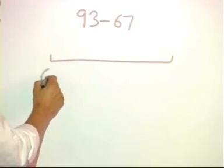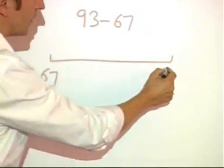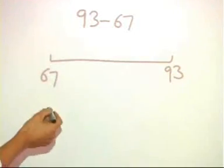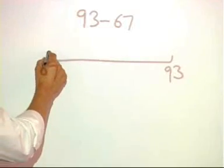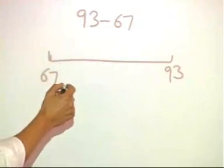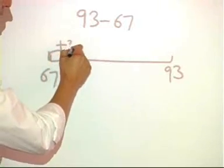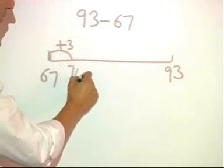What I can do is plot the differences between these two numbers. What you encourage children to do is make meaningful jumps to multiples of 10. So for example, by adding 3, that will take me to 70.